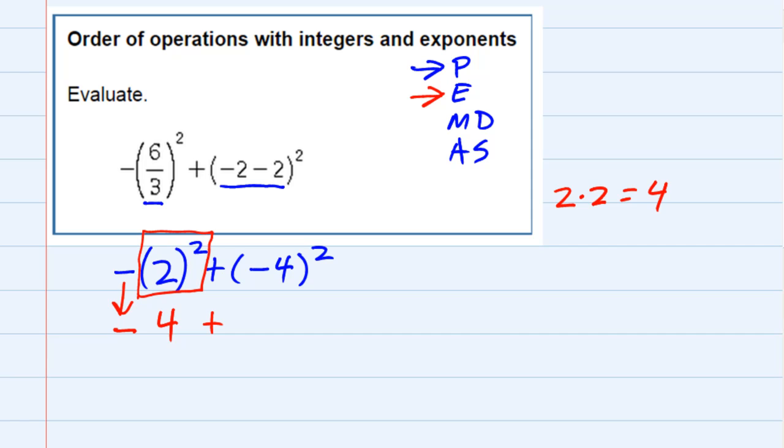And then for the second one, since the negative 4 is in parentheses, that would actually be negative 4 times negative 4, which in this case, negative times a negative, that's a positive. 4 times 4 is 16. So we actually end up with a positive 16 that we're bringing down.